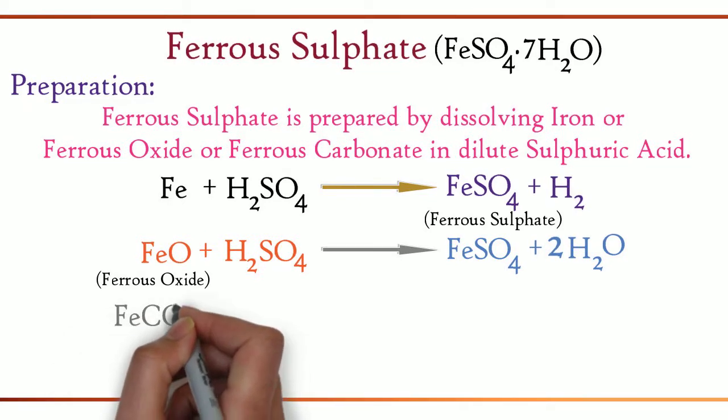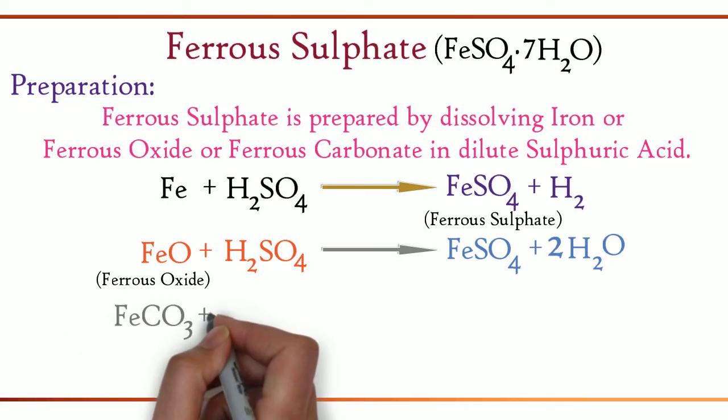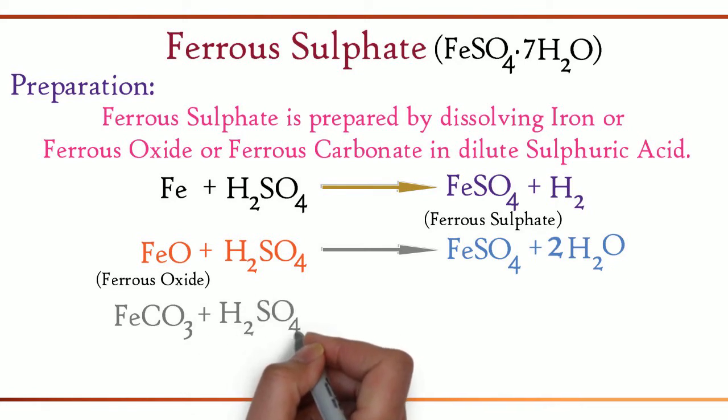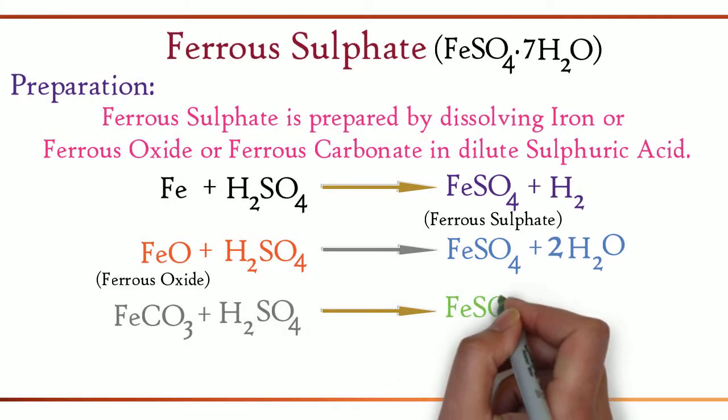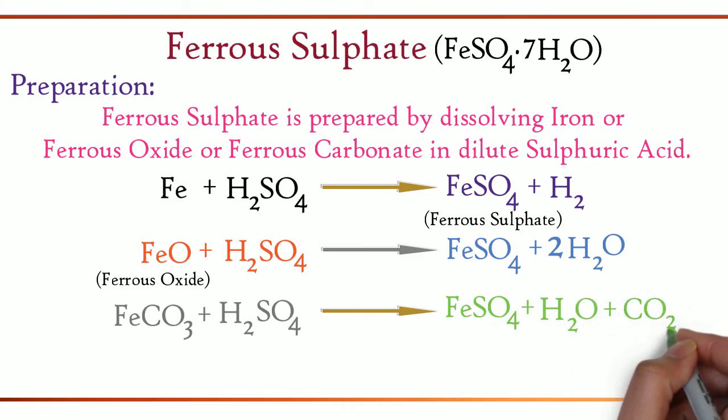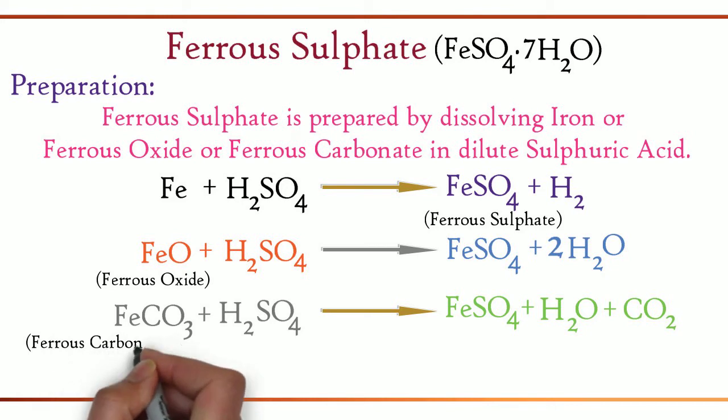Next equation is FeCO3 + H2SO4 gives FeSO4 + H2O + CO2. Ferrous carbonate reacts with sulfuric acid to give ferrous sulfate.